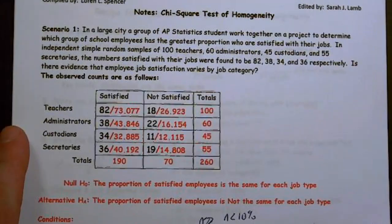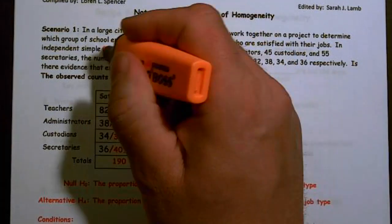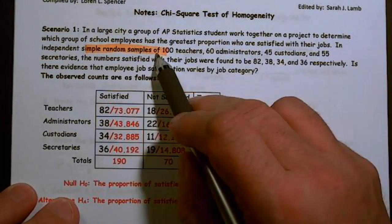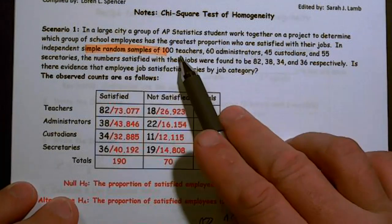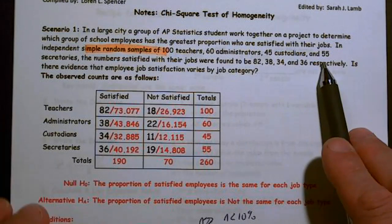In a large city, a group of AP statistics students work together on a project to determine which group of school employees has the greatest proportion who are satisfied with their jobs in independent simple random samples. Hey, multiple samples - chi-squared homogeneity. That tells me that right there. 100 teachers, 60 administrators, 45 custodians, and 55 secretaries.